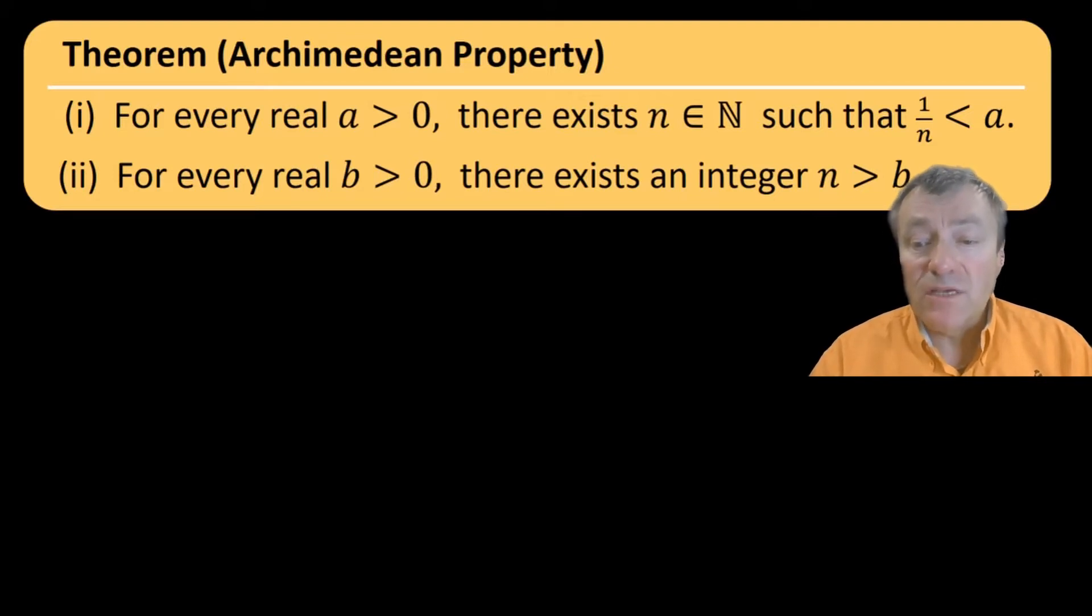Recall that the real number system is an extension of the integers, also the rationals, and this result says something about the way that extension works, something about how the integers and the rationals sit inside the real line. Part one says that if you look at the sequence of fractions one-half, one-third, one-quarter, etc., then there's no real number between all of those fractions and zero. We paraphrase this by saying that there are no infinitesimal real numbers, no infinitely small real numbers.